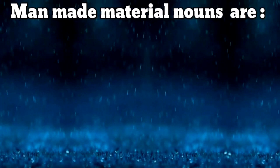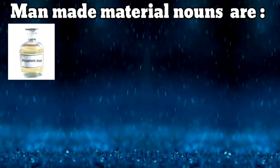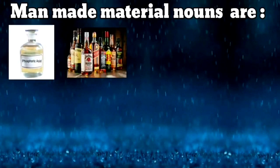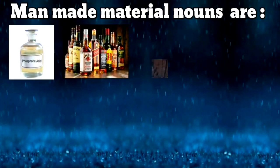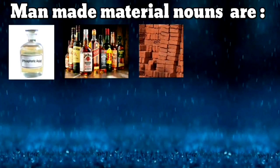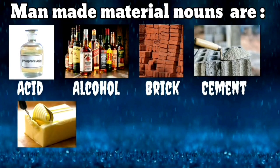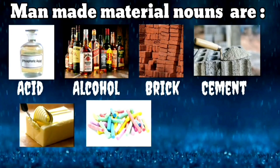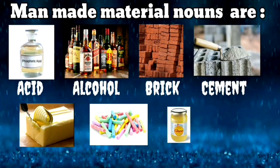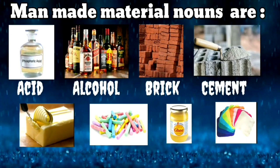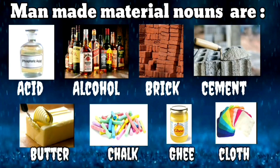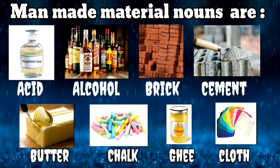Man-made material nouns are acid, alcohol, brick, cement, butter, chalk, ghee, cloth, etc.